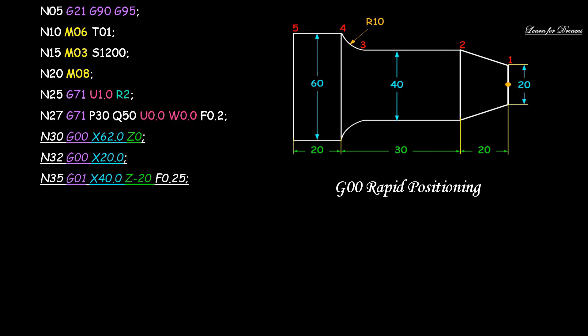Here the Z value is the same as in N30, so you need not mention it again. This is the advantage of canned cycle. The block is N32 G00 X20. Next line is N35 G01 X40 Z minus 20 F0.25. Here we have defined the second point, X40 and Z minus 20. Then we will define the third point, N40 Z minus 40. X is same as above.